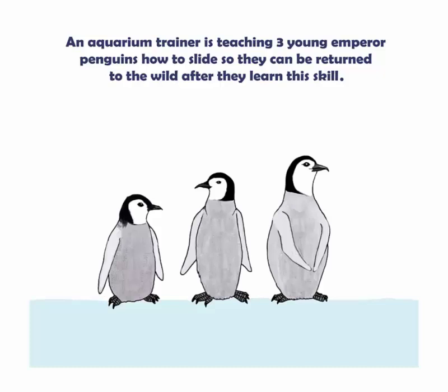Let's use an example of penguins to see what I mean. An aquarium trainer wants to teach three young penguins how to slide. This will allow them to escape predators. So we have Anna, who's 15 kgs, Bert, who's 10 kgs, and Corinne, whose mass is 5 kgs.